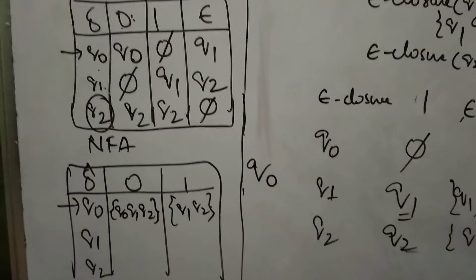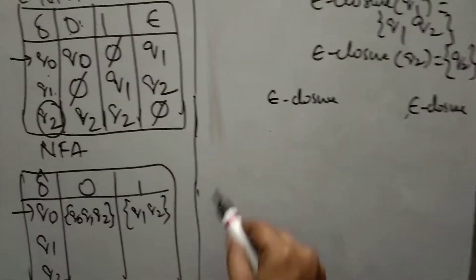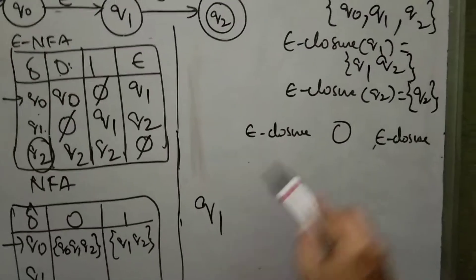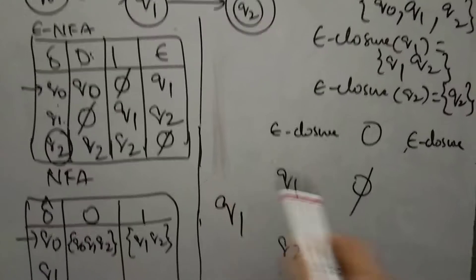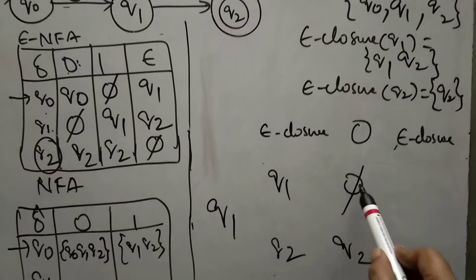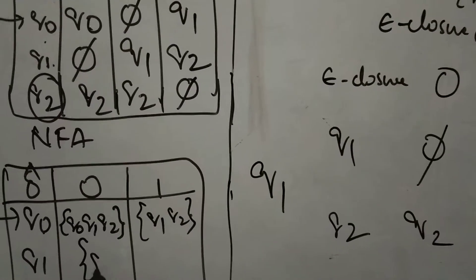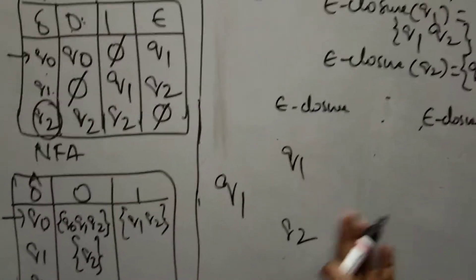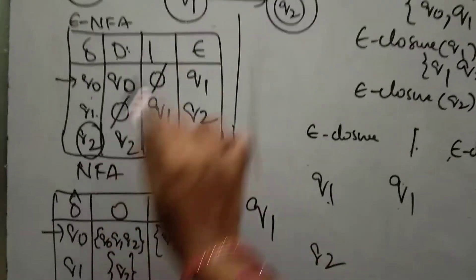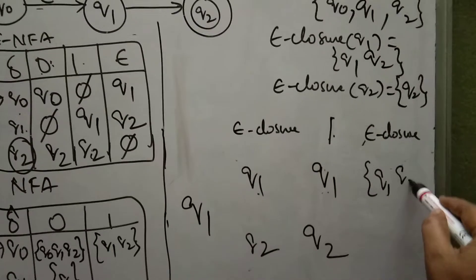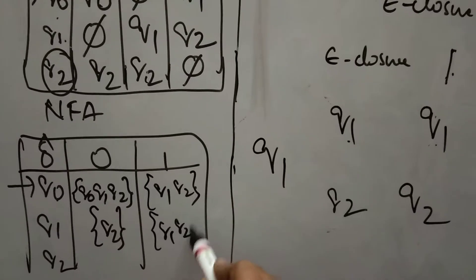Now calculate for Q1. For Q1 upon 0: epsilon closure of Q1 is {Q1, Q2}. Q1 upon 0 is dead state (phi), Q2 upon 0 is Q2. Epsilon closure of phi is phi, epsilon closure of Q2 is Q2. Applying union, Q1 upon 0 gives {Q2}. For Q1 upon 1: Q1 upon 1 is Q1, Q2 upon 1 is Q2. Epsilon closure of Q1 is {Q1, Q2}, epsilon closure of Q2 is Q2. Applying union, Q1 upon 1 gives {Q1, Q2}.